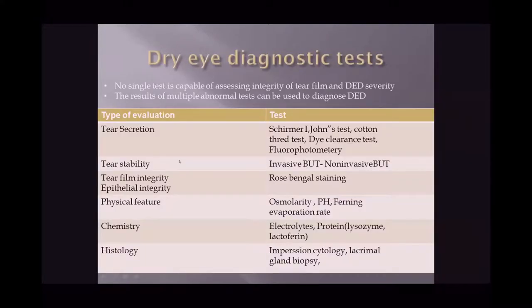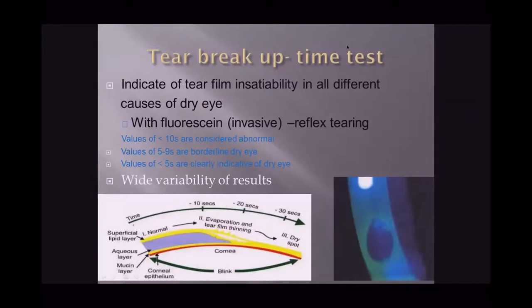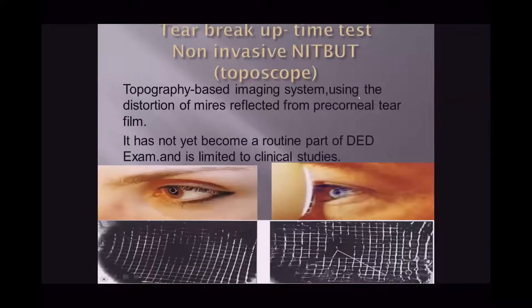No single test can assess the integrity of the tear film and severity of dry eye; results from multiple abnormal tests are used to make the diagnosis. Tear breakup time indicates tear film instability. The invasive type has wide variability, while non-invasive tear breakup time uses a topography-based imaging system reflecting distortion of Mires on the precorneal tear film, though it remains limited to clinical studies.